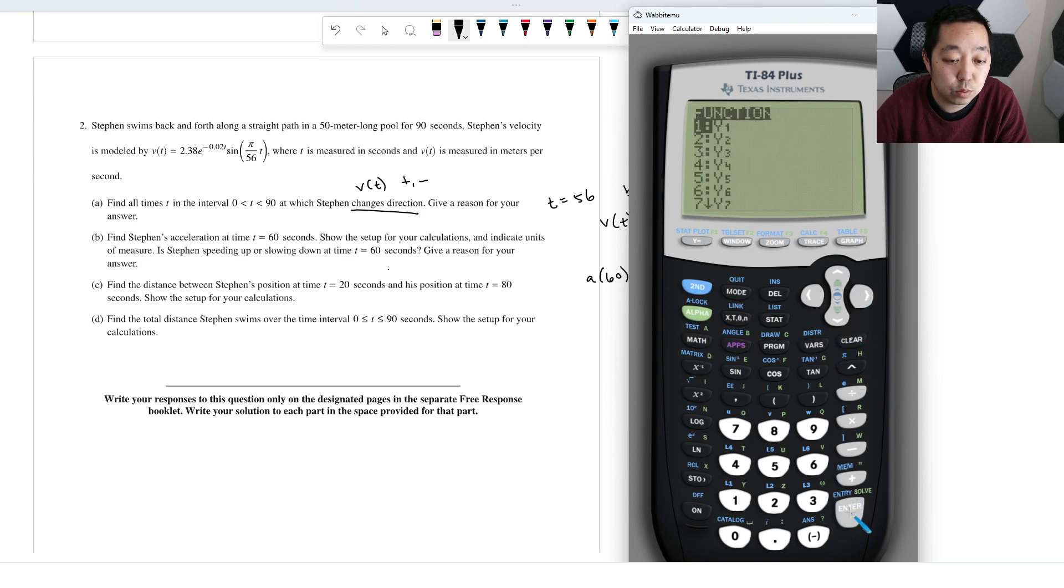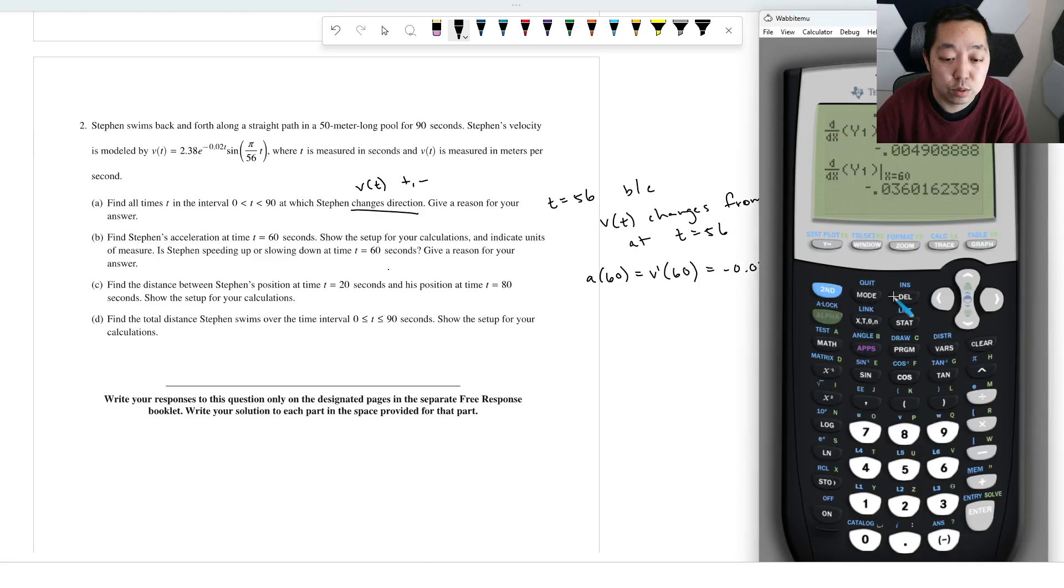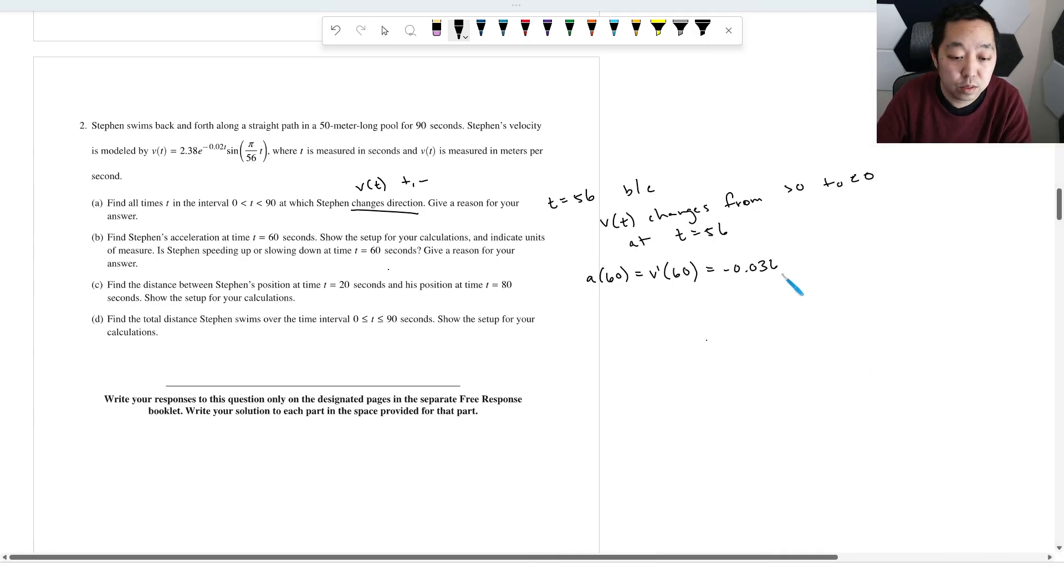We're going to do n derivative of x, vars, y vars, y1. That's why we double check we entered in correctly, so we just use that so we don't have to retype it in. The velocity, that is negative 0.036. Oh, and then, they want you to compute it. So we should do multiply 60. So that's the acceleration. That's your setup. You don't actually have to do the derivative. It's a calculator, it's fine. And then if I want to know if it's speeding up or slowing down, indicate units of measure. Don't forget my units.